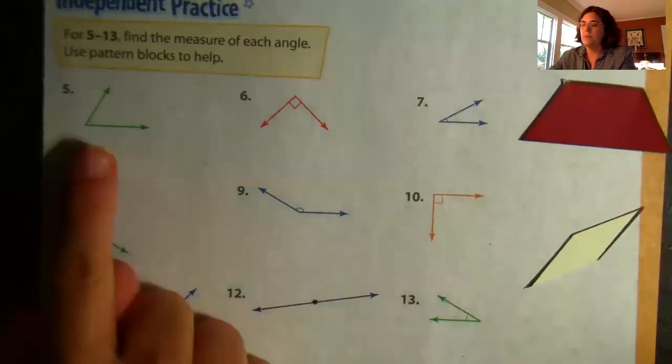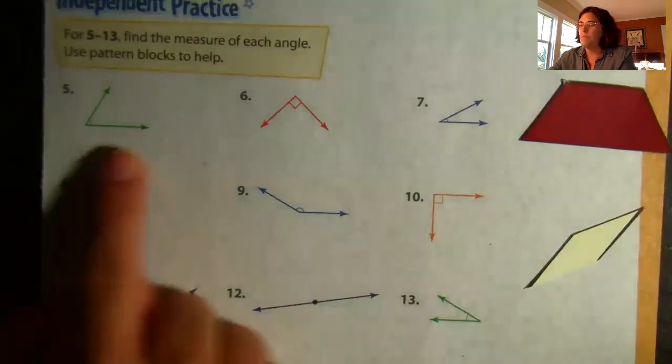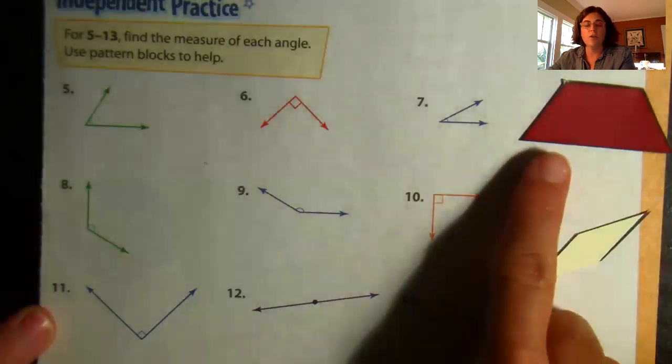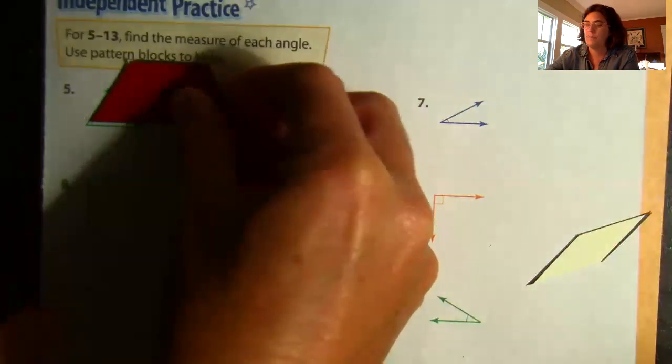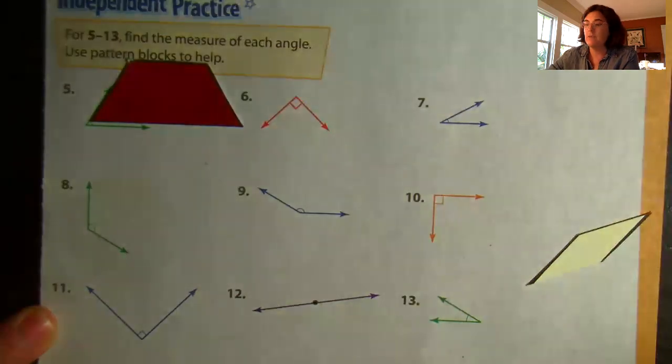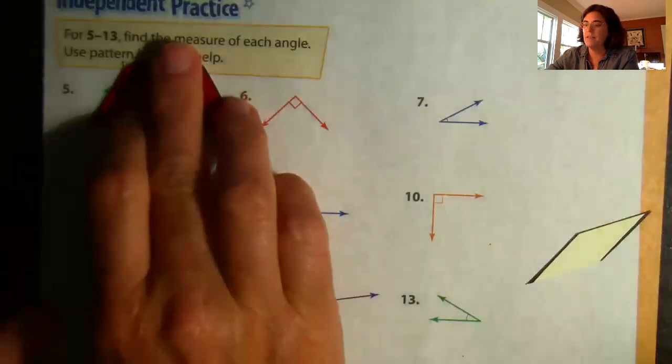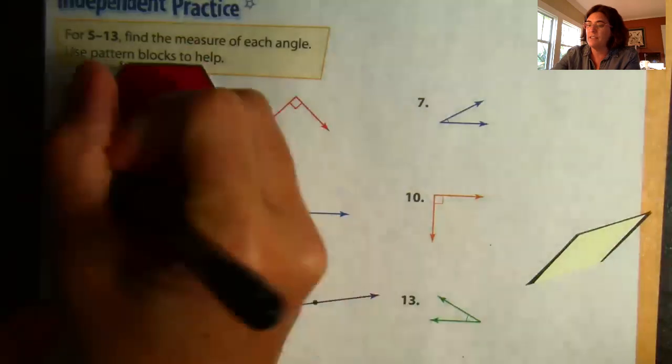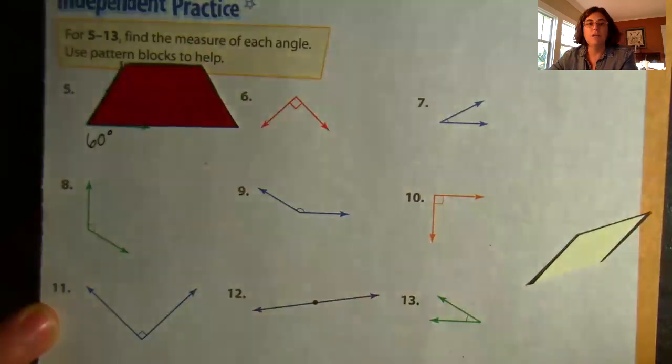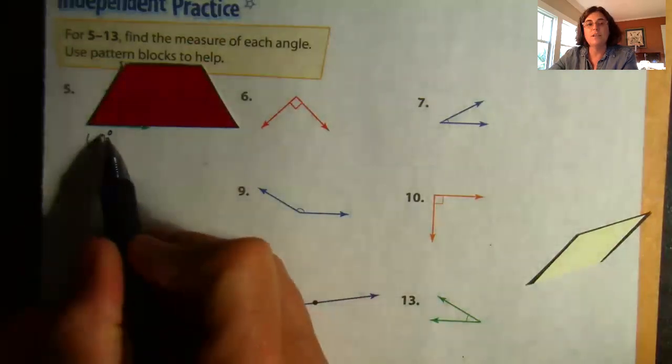So I'm gonna look at this first one, number five. It looks like it might be similar to the smaller angle in the trapezoid, which equals 60 degrees. Let's see. Yes, I see when I slide this trapezoid in there, it covers that angle completely and doesn't go over. So that angle of number five is 60 degrees. And make sure when you write your angles, your degrees, my friends, that you put that little tiny zero up there. That's the degree sign so I know that's what you're talking about.